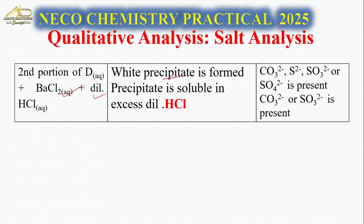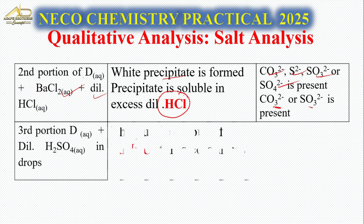Take another portion of solution D, add BaCl₂, then add dilute HCl. A white precipitate forms, and the precipitate is soluble in dilute HCl. This is very important. The possible ions are CO₃²⁻, S²⁻, SO₃²⁻, or SO₄²⁻. In excess, likely CO₃²⁻ or SO₃²⁻.